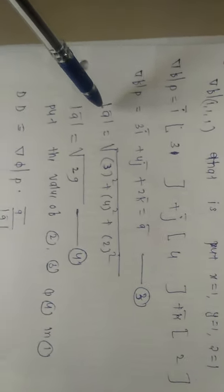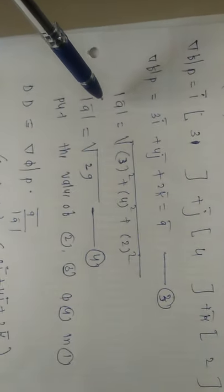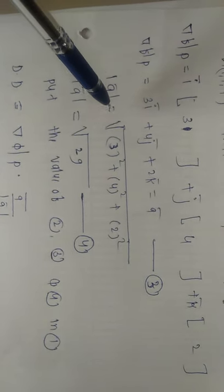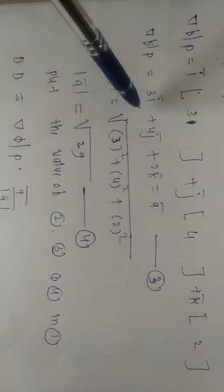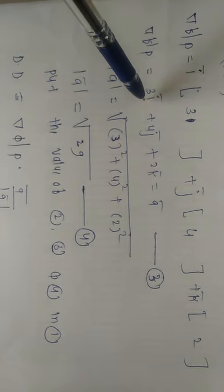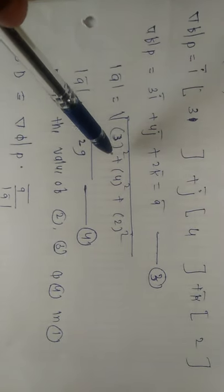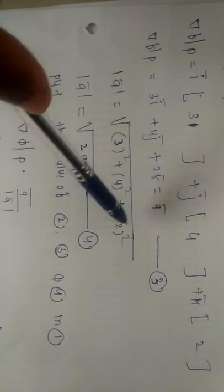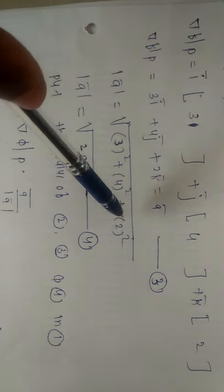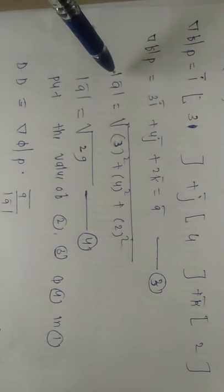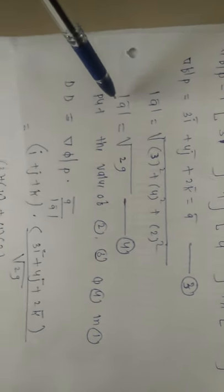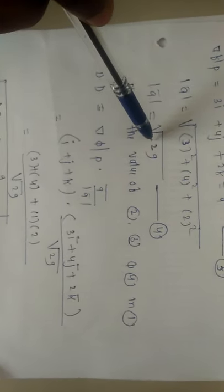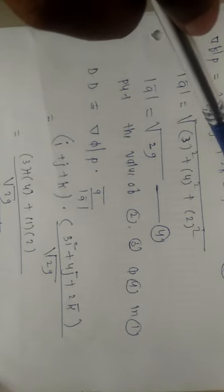Next we require |ā|, which is the third thing. To find |ā|, take the square root of the sum of squares of the coefficients of i, j, and k. So |ā| = √(3² + 4² + 2²) = √29. This is equation number 4.